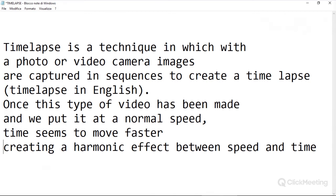First I'd like to explain what time lapse is — the technique used in the following examples. It's a technique in which a photo or video camera takes images in sequence. For example, capturing one frame every half second up to every 30 seconds. When played back at a normal speed of 25 frames per second, time seems to move faster.